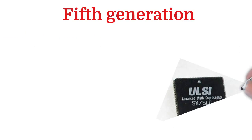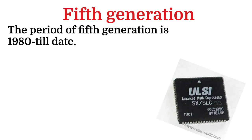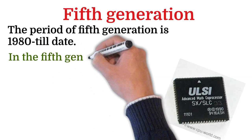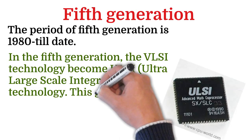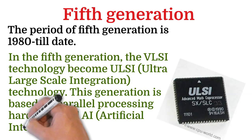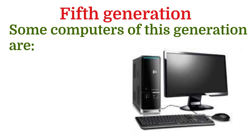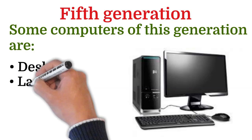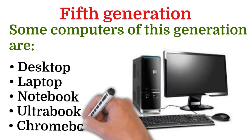The fifth generation computers span from 1980 to the present day. In this generation, VLSI technology became ULSI — Ultra Large Scale Integration technology. This generation is based on parallel processing hardware and AI software. Some computer types of this generation are Desktop, Laptop, Notebook, Ultrabook, and Chromebook.